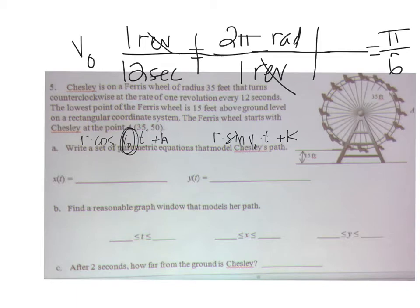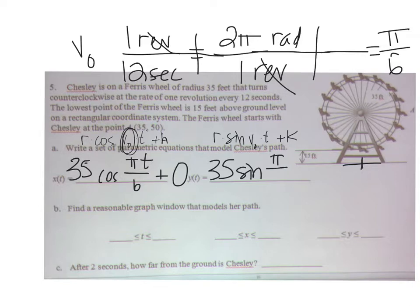So my actual equation looks like a radius of 35 times the cosine of πt over 6, plus the x value - let's make the x value 0. That means the y equation is going to be 35 sine of πt over 6 plus 50. That's the 15 feet to here plus the 35-foot radius, gives me a center at (0, 50).